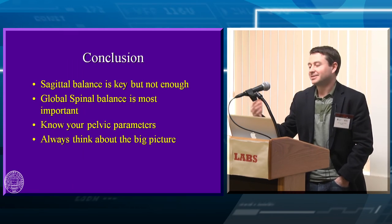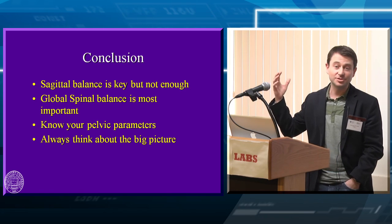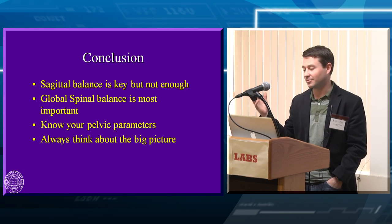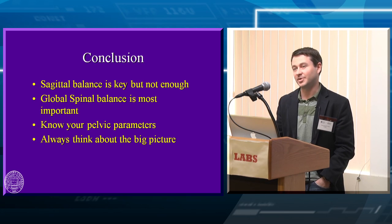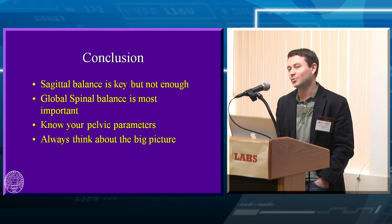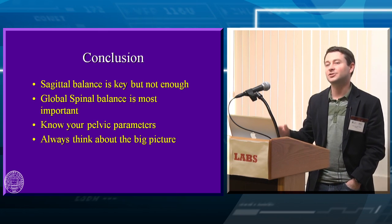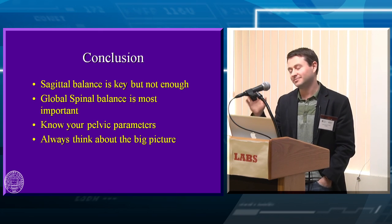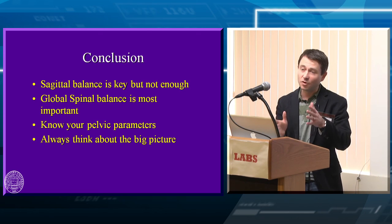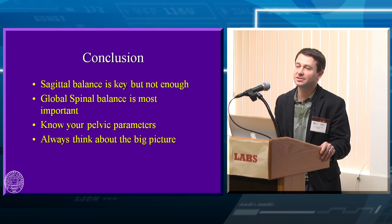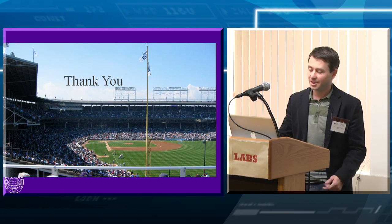In conclusion: sagittal balance is key, but C7 plumb line isn't enough — you've got to look at the pelvis, you've got to look at the head. As neurosurgeons we should definitely be looking at the head and thinking that through. Know your pelvic parameters and think big picture on all these patients. If you have a grade one spondylolisthesis and someone asks should you get a full-length film — absolutely. Stand them up, walk them, get a full-length x-ray. Even if you're not doing a big deformity correction, knowing the balance and setting patients up for future success is really important. Thank you.